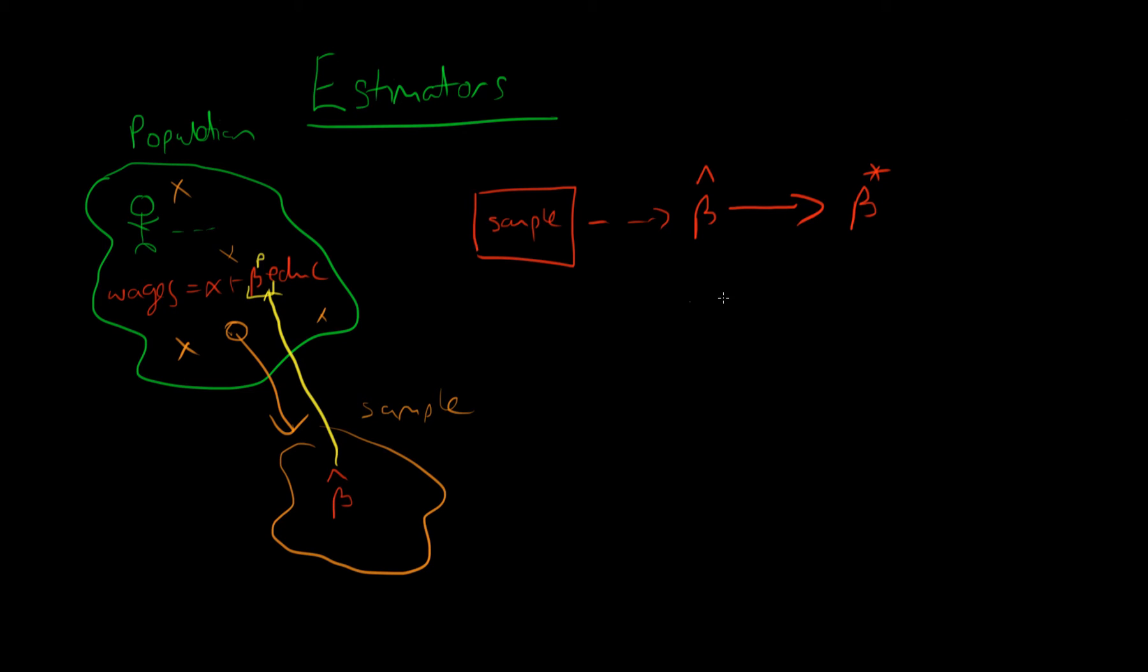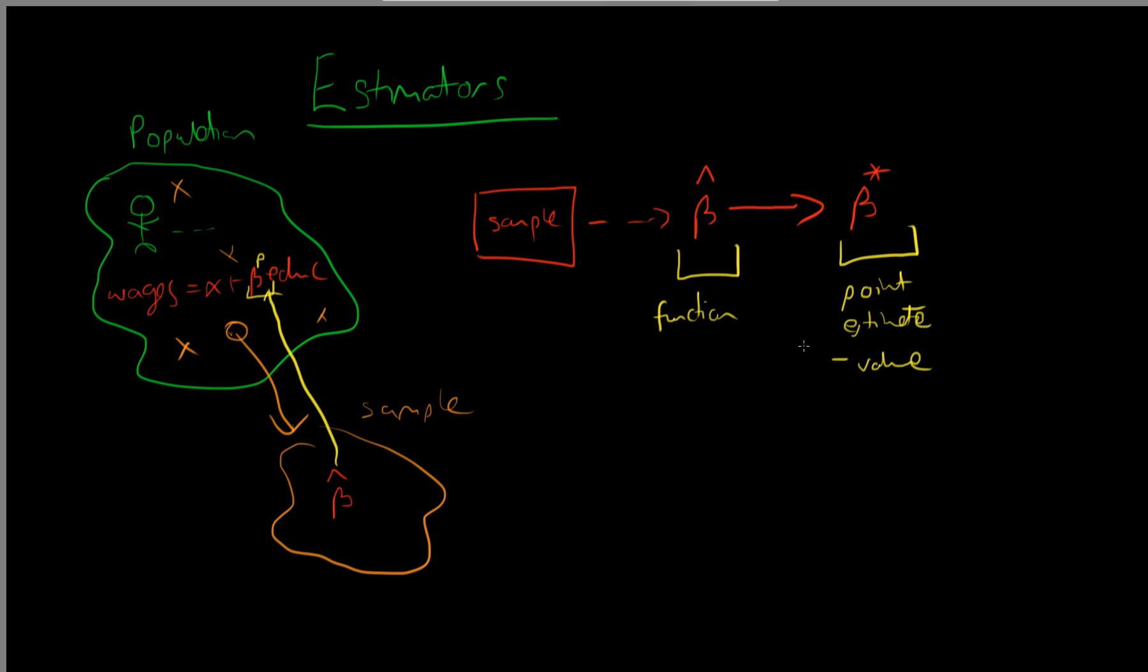So note that there is a difference between an estimator which is in general some sort of mathematical function and beta star which is just a point estimate of the population parameter. The former being a function, the latter just being some sort of value, perhaps fifty dollars.